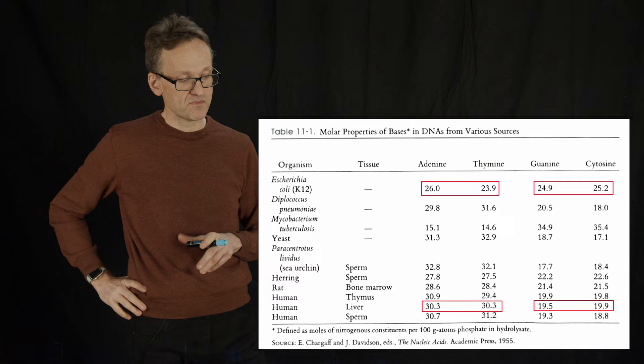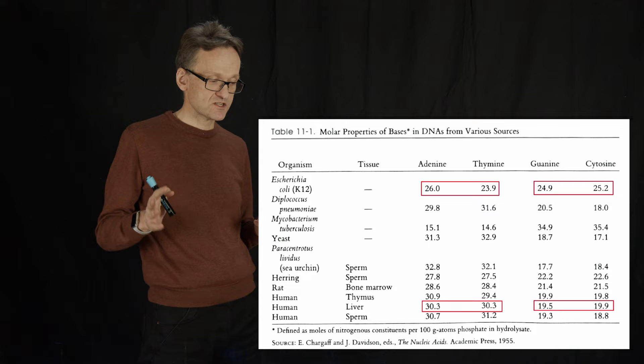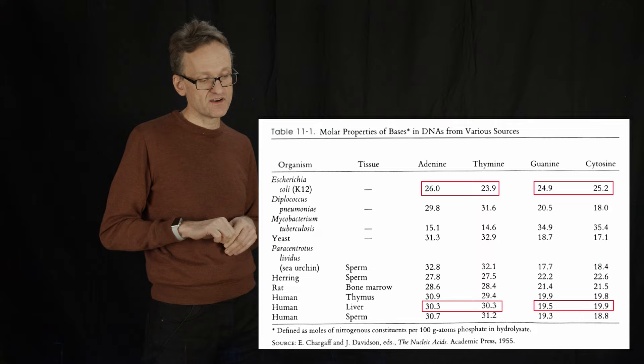And they used one more observation that had been published a few years earlier by Erwin Chargaff. Chargaff had published a paper where he had noticed that these bases appear to be pairwise somewhat similar, that the number or concentration of adenine tends to pretty much always equal the number of thymines and similarly the number of guanine bases always equals the number of cytosine bases in a particular cell.